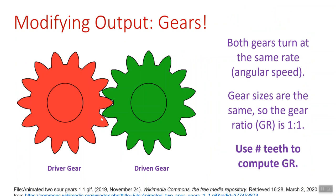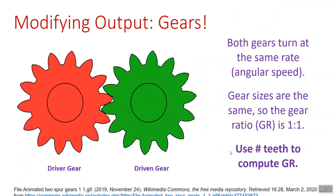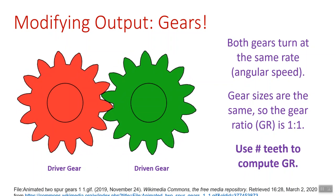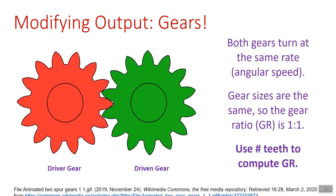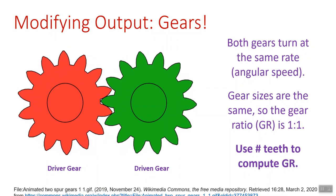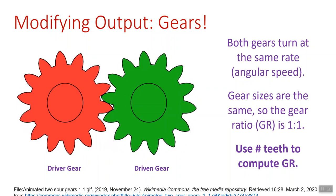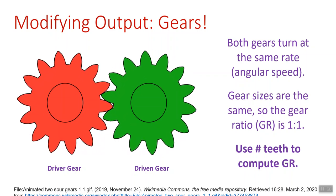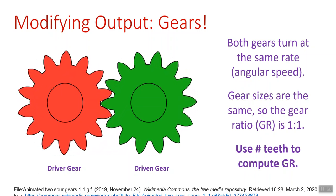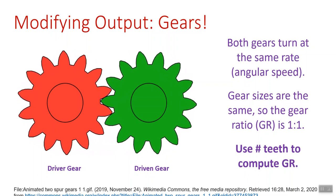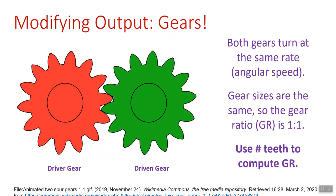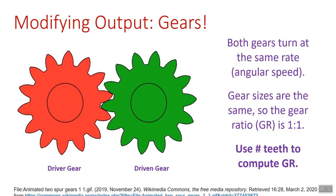That's what these gears are for — modifying the output. These slides have some excellent animations. The left gear I've labeled the driver gear — pretend that's connected to your motor. The green on the right is the driven gear connected to whatever load you want. In this case, these gears are exactly the same. The motor spinning on the left, because of the connections between the teeth, is driving the one on the right. If you stare at this long enough, you can see they're spinning at the same rate — as long as these teeth are meshing, they have to be turning at the same rate.